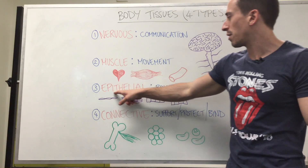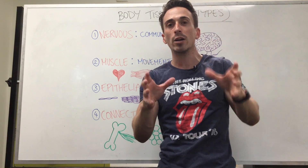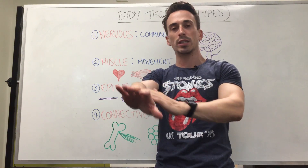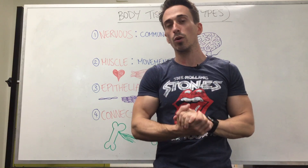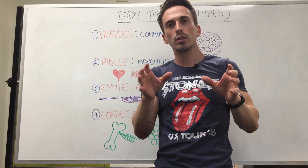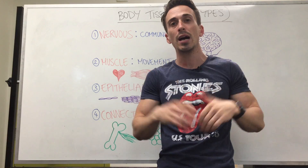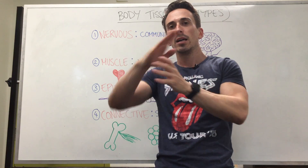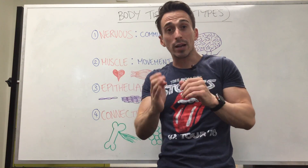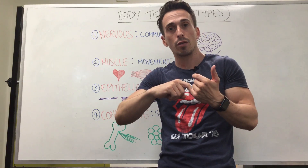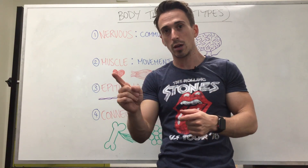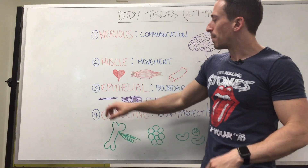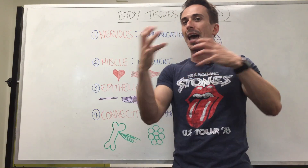Moving on to epithelial tissue — epithelial tissue forms boundaries between environments. For example, you've got epithelial tissue lining your skin, separating the outside world from the inside of your body. You've got epithelial tissue of your kidneys, your lungs, and anywhere there are two separate environments. Epithelia sets that boundary, and it can come in different shapes and layers.